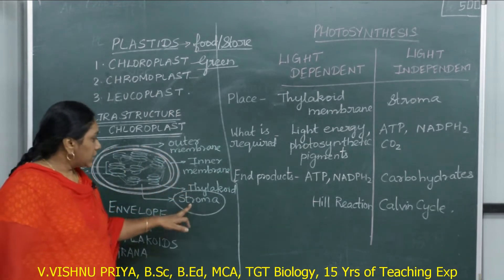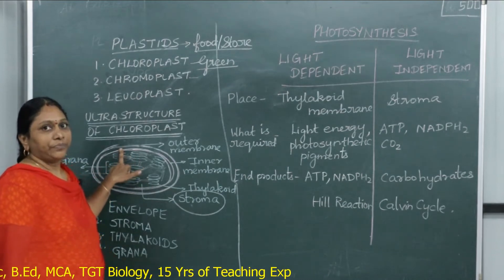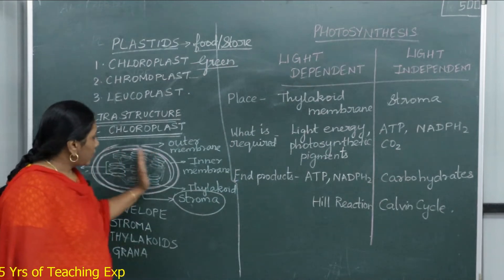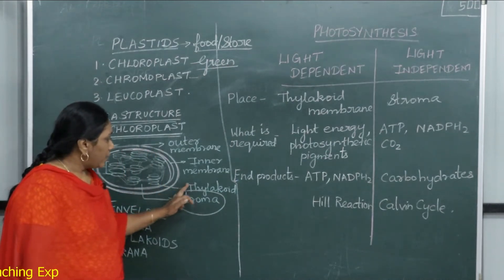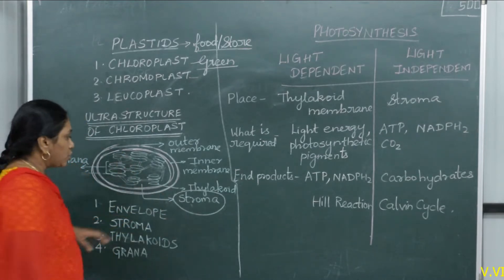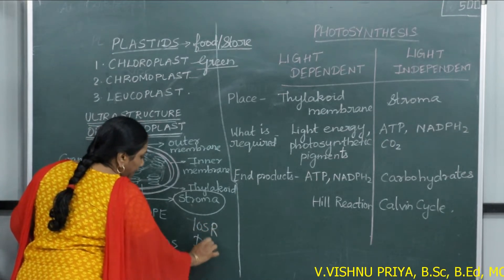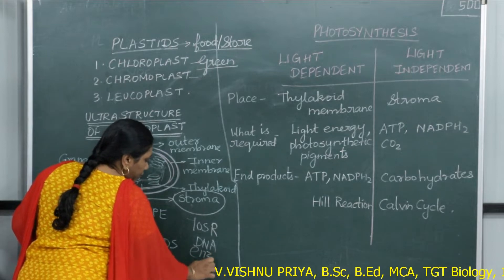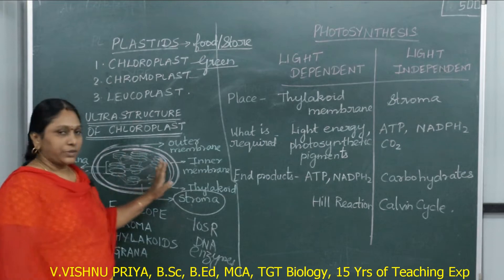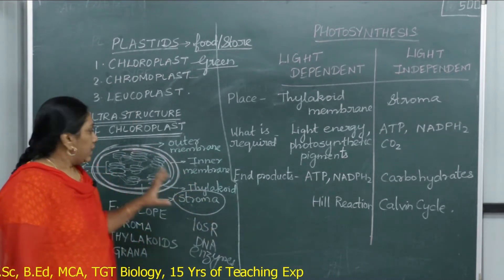So first we have the envelope, consisting of outer membrane and inner membrane. Beyond that, inside the chloroplast, there is no further boundary — the background is called stroma. In the stroma we have 70S ribosomes, DNA, and many enzymes essential for photosynthesis. So the matrix of the chloroplast is called stroma.